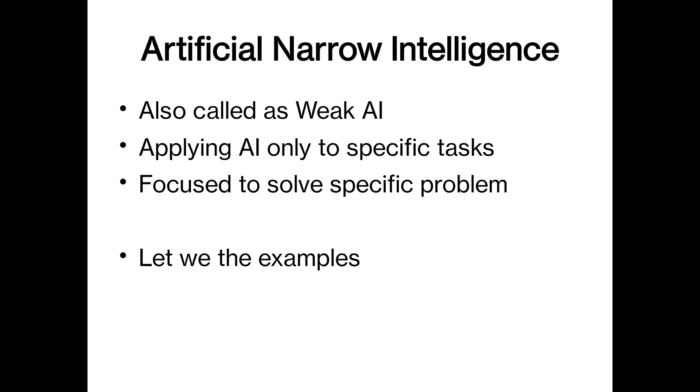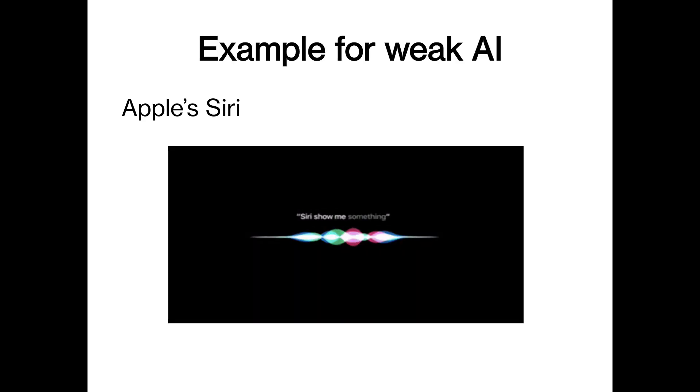First, we are going to see about artificial narrow intelligence, ANI. We also call it weak AI. Applying AI only to specific tasks, it focuses to solve some specific or particular problem.